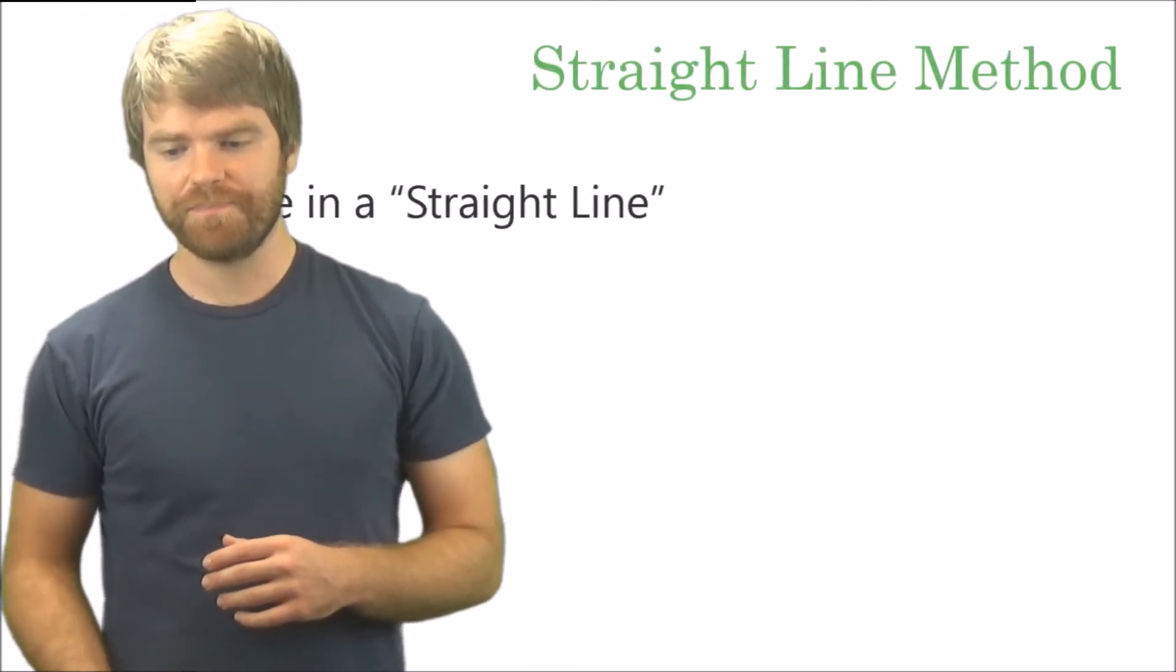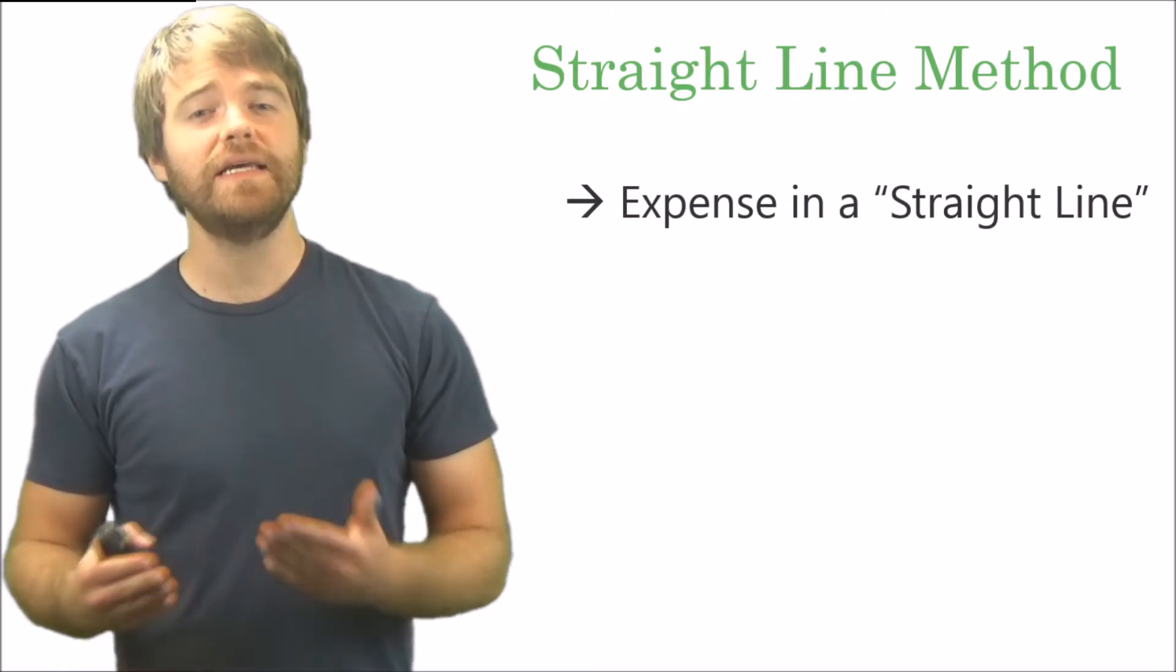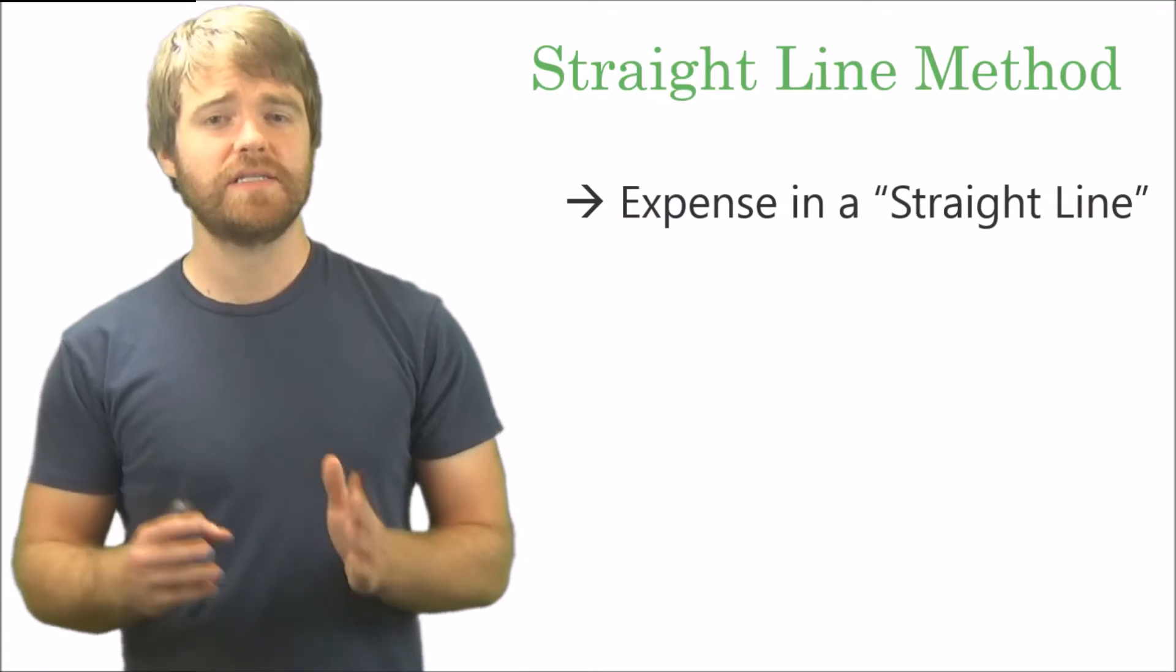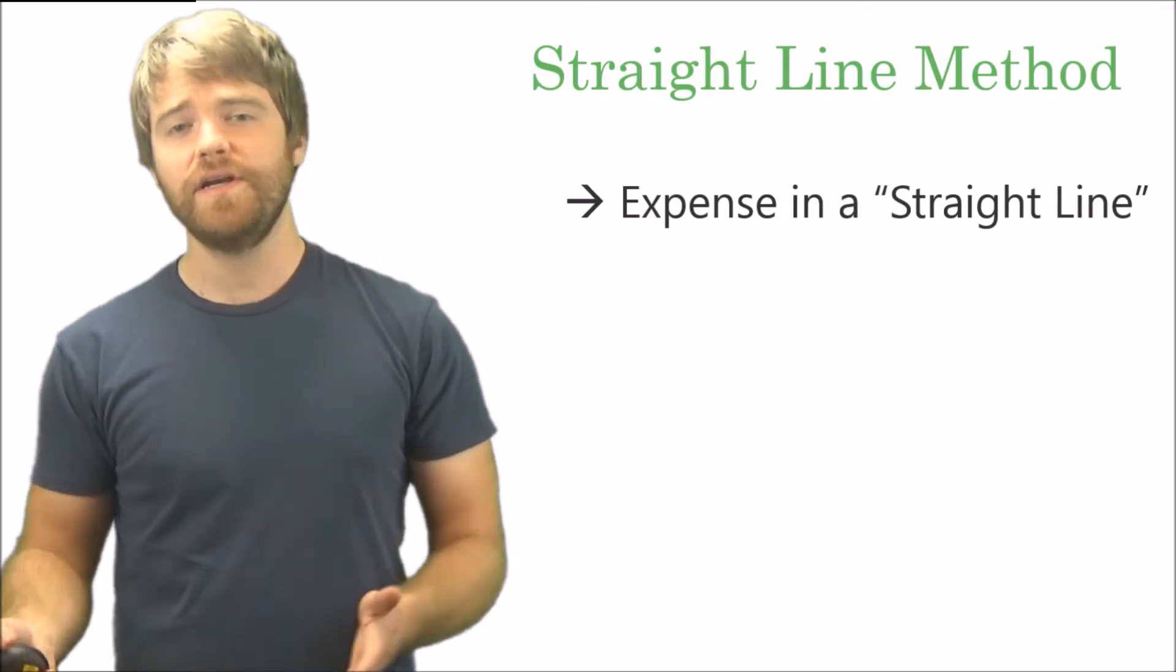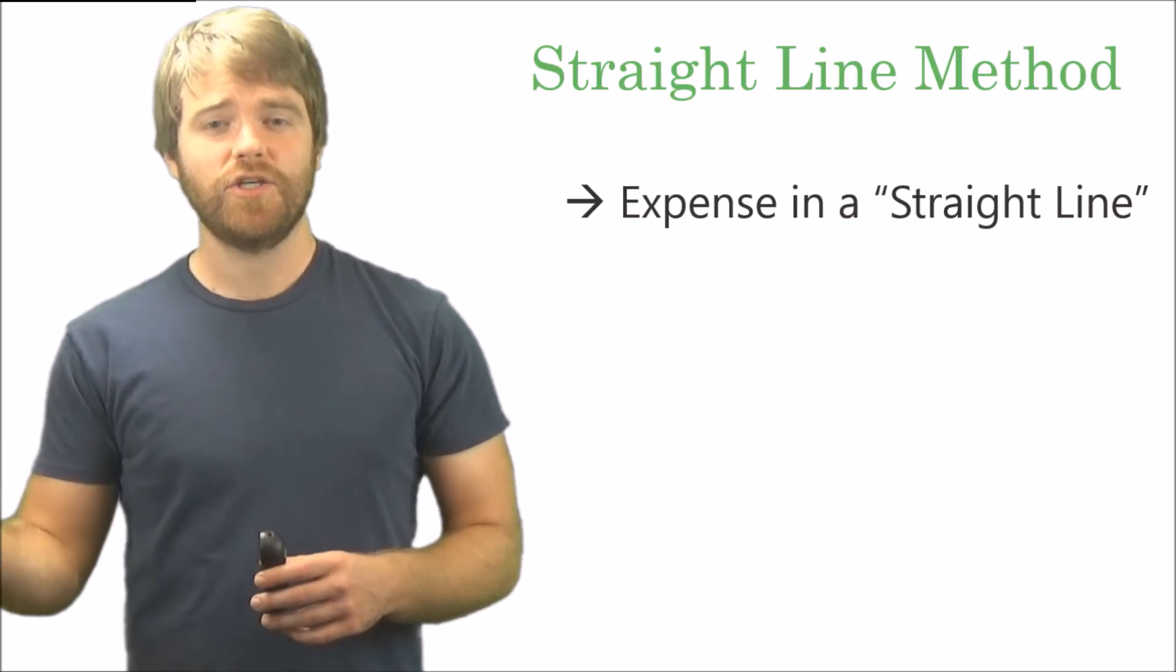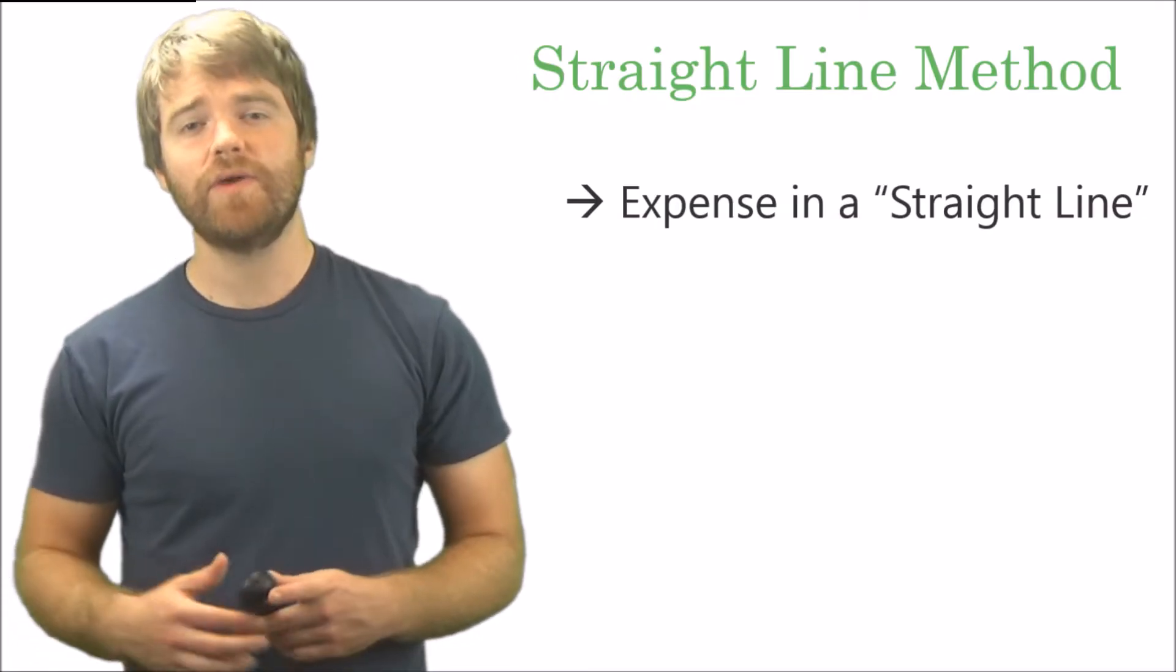Let's talk about the straight line method. What is this? Well, you expense the asset in a straight line—it's linear. Depreciation expense is the same from year to year. You expense that asset evenly over time.